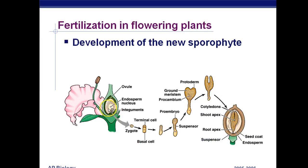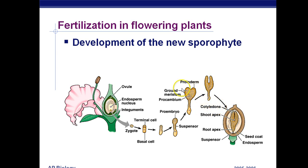Now that we have our zygote, the zygote is going to start to develop — this is called germination. We can either form two cotyledons or one cotyledon. Cotyledons become seed leaves in the developing plant. If it has two cotyledons, it's a dicot. One cotyledon, like corn and grasses, it's a monocot.